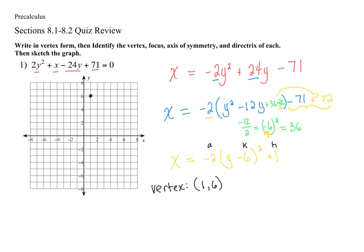This problem does ask for the axis of symmetry. The axis of symmetry is now going to be y equals something, because it's going to be a horizontal line — whatever the y value is there. So my axis of symmetry runs horizontally. If I were to sketch this parabola, it would open to the left. I still have to label two other items: my focus and my directrix. My focus falls on that axis of symmetry inside the parabola, and my directrix is perpendicular to it, outside the parabola.